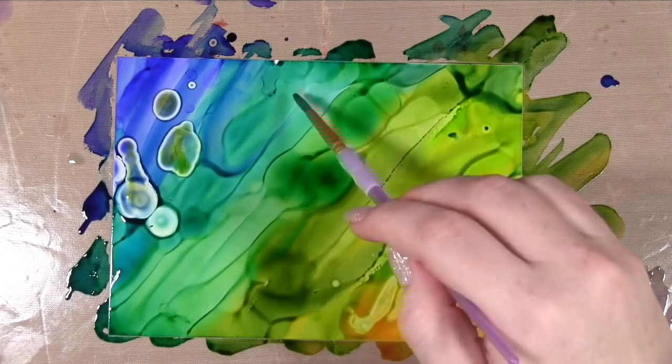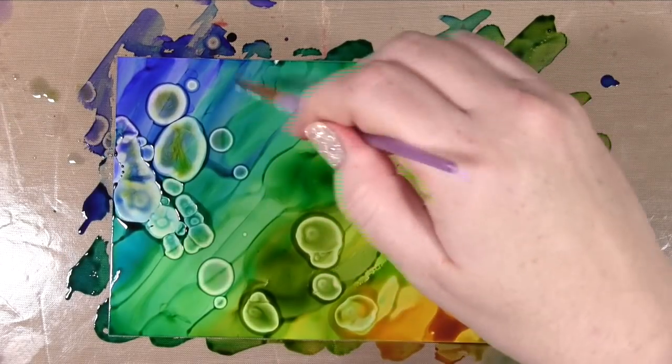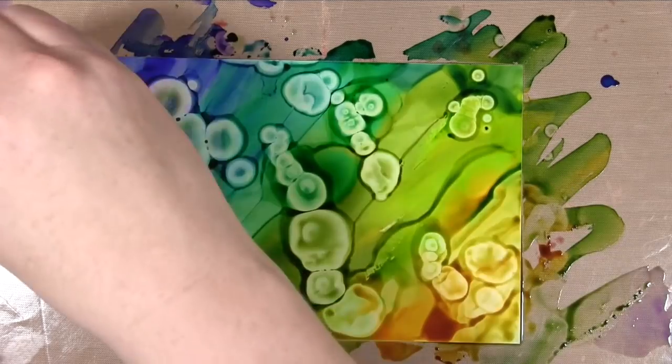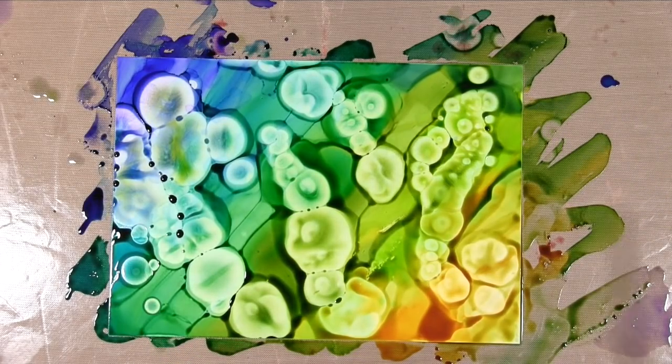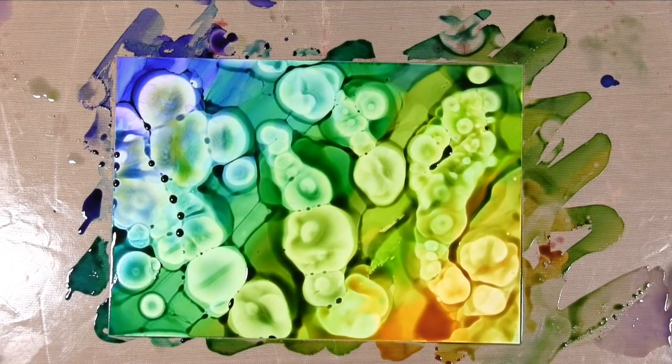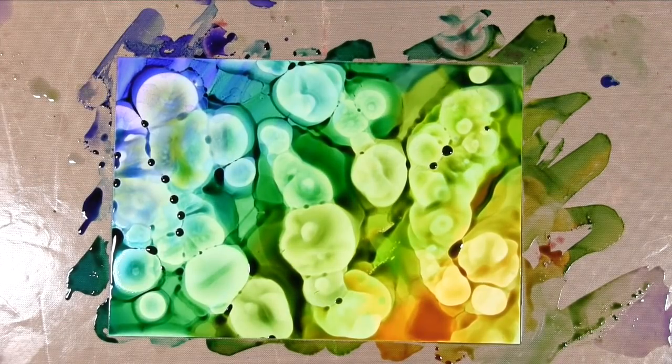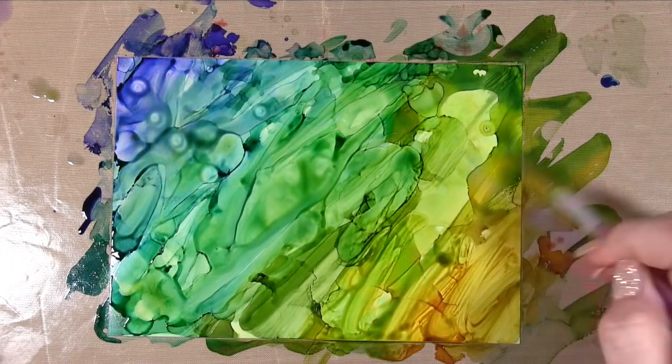I'm just dotting the alcohol into the ink on the Yupo paper and what it does is it moves it apart and lightens it. If you have the blending solution from Tim Holtz, that doesn't actually lighten it, it just moves it, but